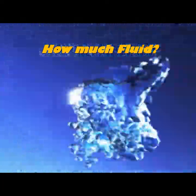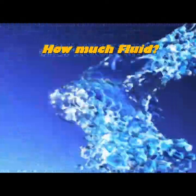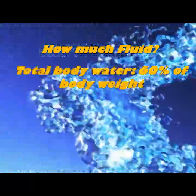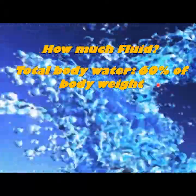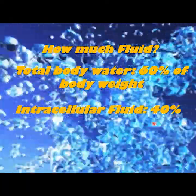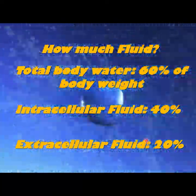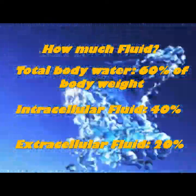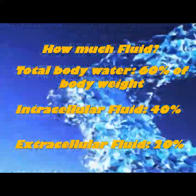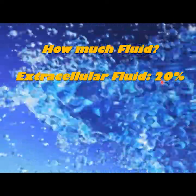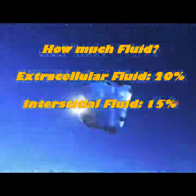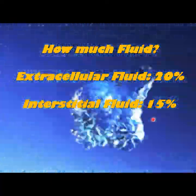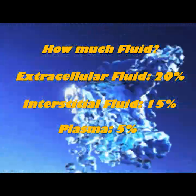Here are the key fluid volumes for each compartment. Total body water is 60% of body weight. Intracellular fluid is 40% of body weight, and extracellular fluid is 20% of body weight — 20 plus 40 gives us the 60% total. Within the extracellular compartment, interstitial fluid is 15% of body weight and plasma is 5% of body weight. This is very practical for estimating how a medicine will be distributed in a compartment.